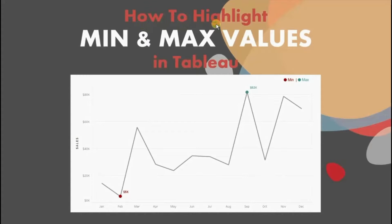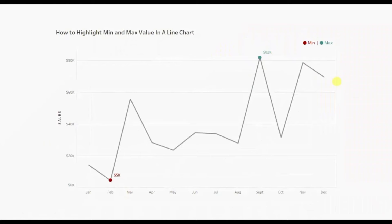In today's session we will see how to highlight minimum and maximum value in a line chart in Tableau. Let me first show you the demo of what we will be doing today. Here I have a line chart that shows sales done in different months starting from January till December. The requirement is that we need to highlight the minimum and the maximum value in this line chart so that by just viewing this chart we can easily figure out the month with the lowest sales and the month with the highest sales.